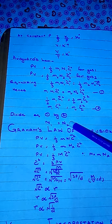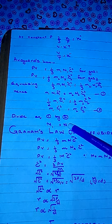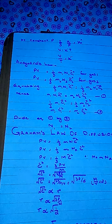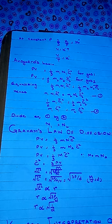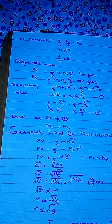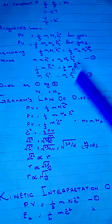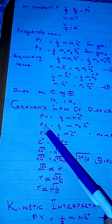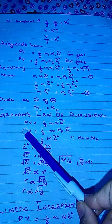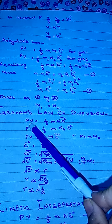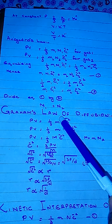This is the mathematical representation of Avogadro's law: equal volumes of all gases at the same temperature and pressure contain equal numbers of molecules. Now the last law is Graham's law of diffusion.